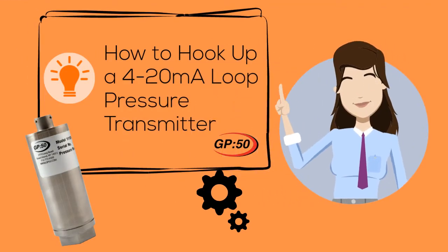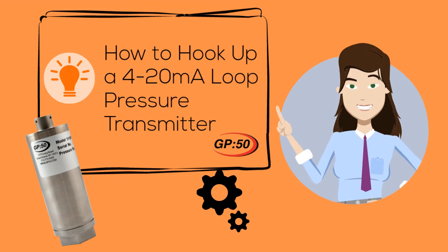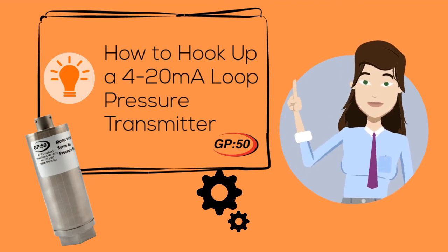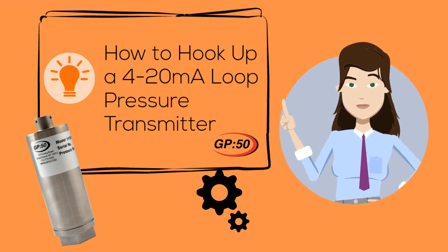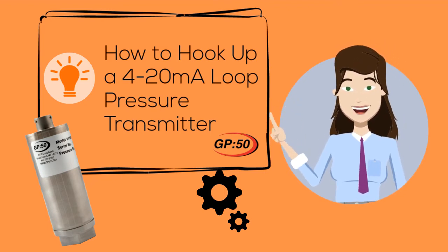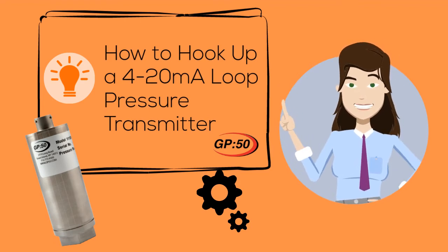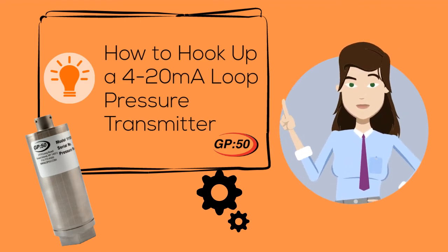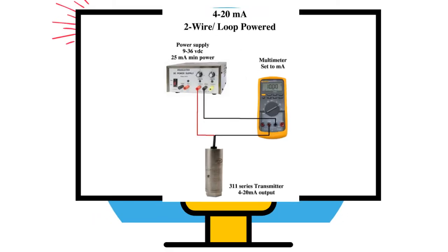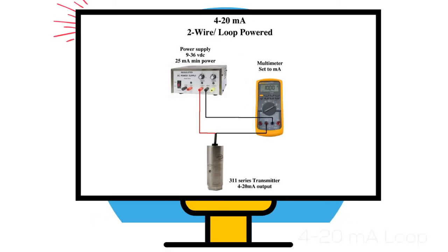In the process control world, there are many different types of outputs available. Analog signals provide a varying voltage or current signal and are the predominant inputs used in process control today. Of these analog outputs, the 4 to 20 milliamp loop is the most dominant standard used today. This video will explain the basic hookup of a loop-powered pressure transmitter.